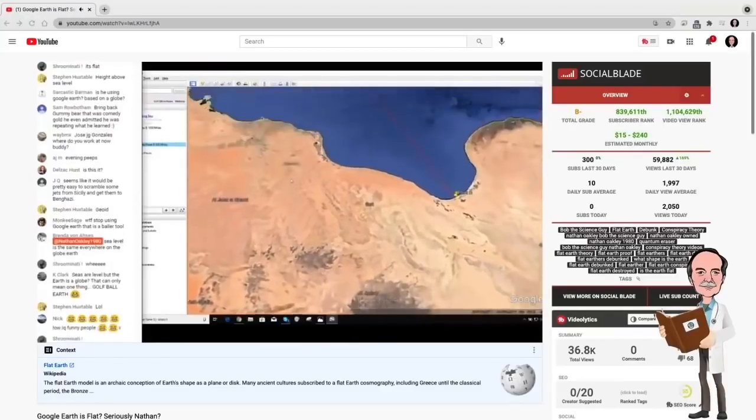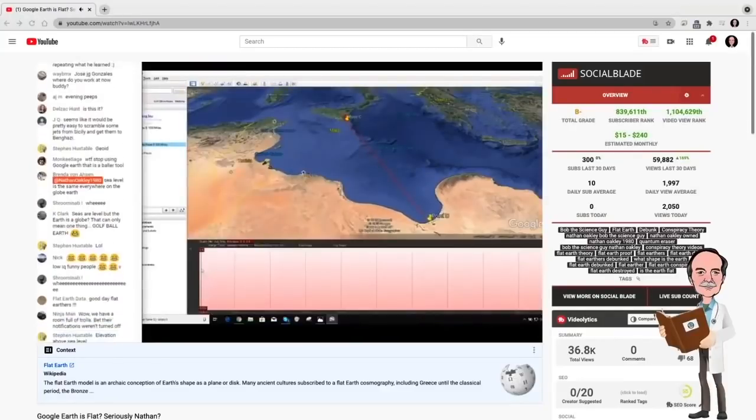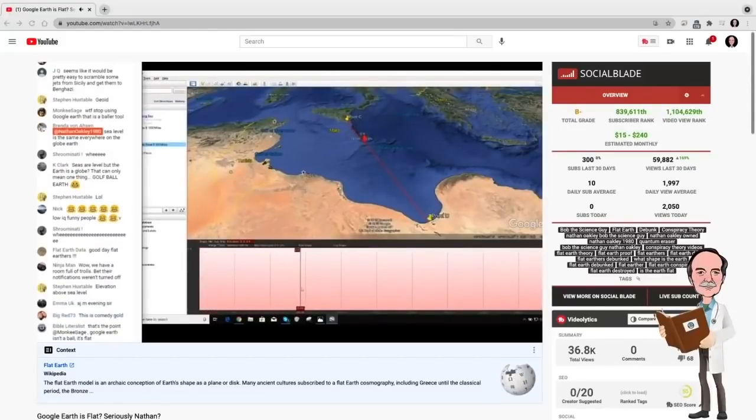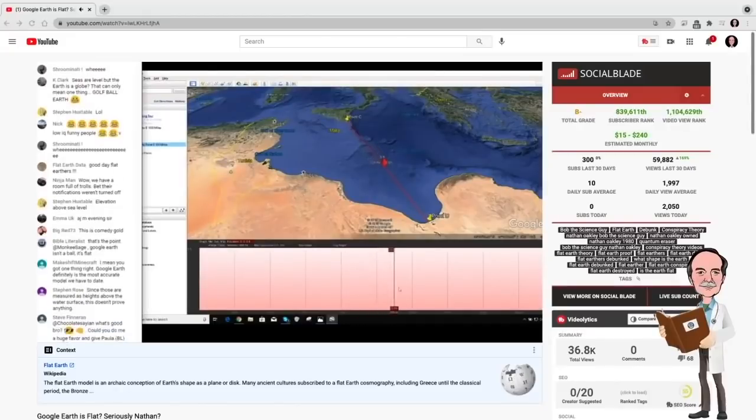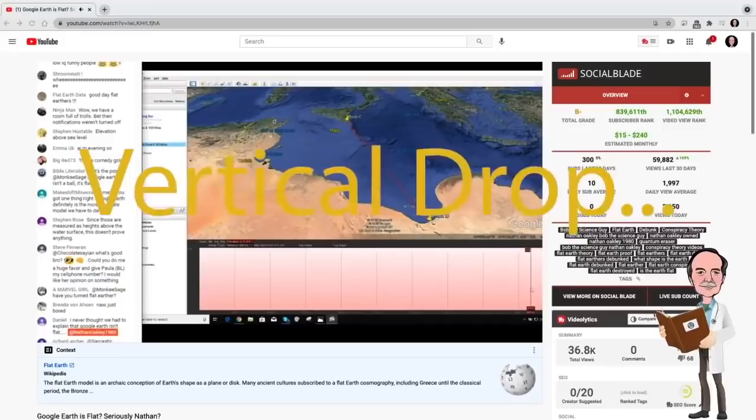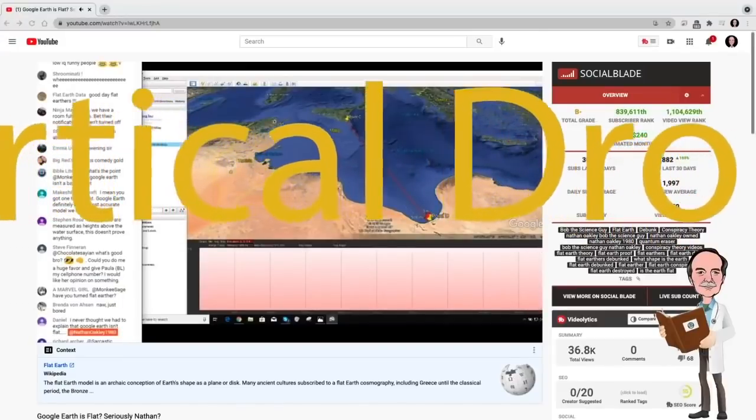We'll get an elevation profile. So from the shore of Sicily for 500 miles as you can see we have a zero point zero zero vertical drop. In fact it's 508 miles.